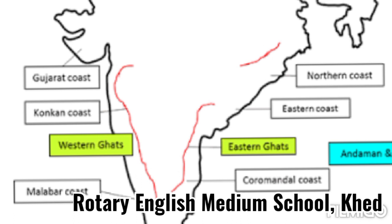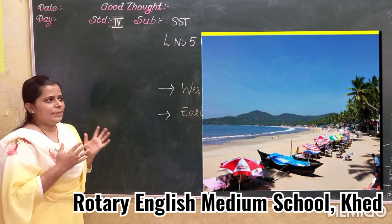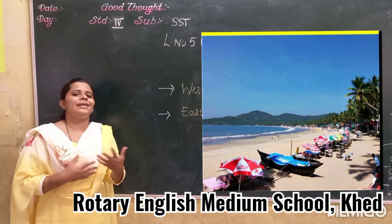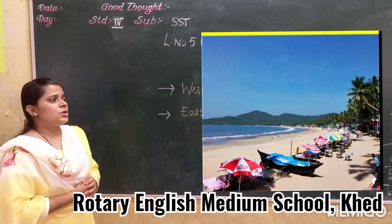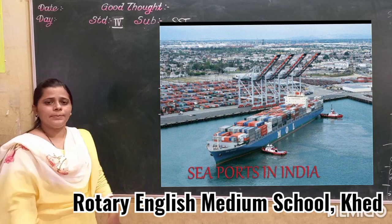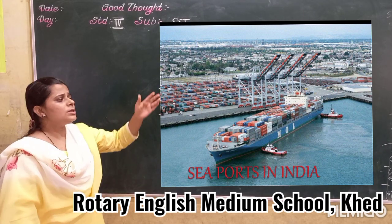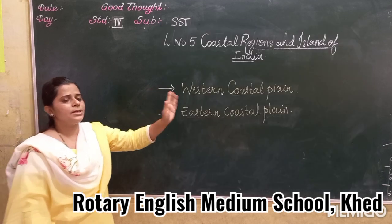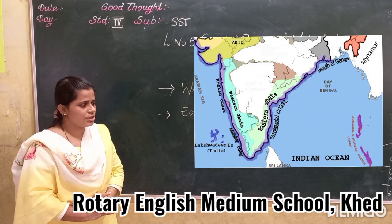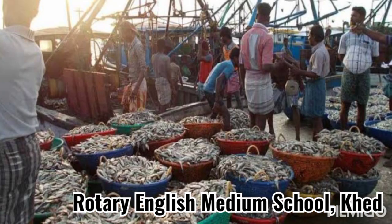Coastal plains are important to us in many ways. Important seaports have developed along the coastal plains. The long sea coasts on both sides are important for fishing and trade. Sea fish are consumed within the country and also exported to foreign countries.